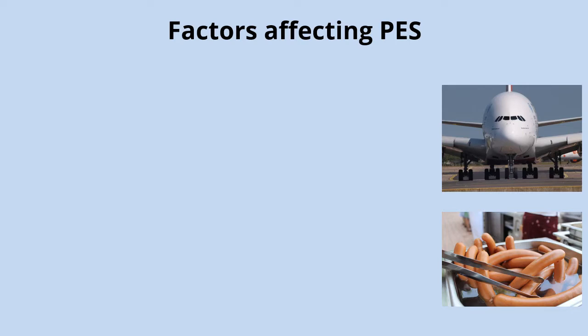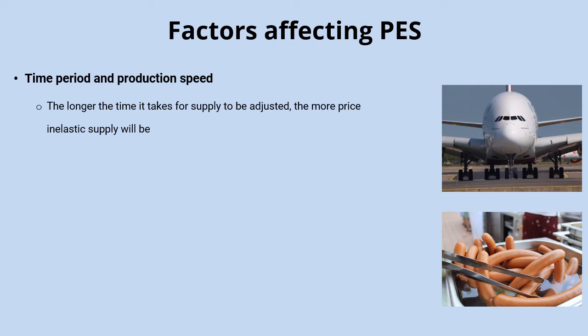There are a few factors that determine whether supply is more price elastic or inelastic. Probably the most important is time — how long does it take to make the product? The longer it takes, the more price inelastic supply is likely to be. A hot dog manufacturer could increase production quite rapidly in response to a price rise, making supply more price elastic. But a manufacturer of passenger jets can't increase quantity supplied quickly — it would take years to expand production, so supply for those goods is more likely to be price inelastic.